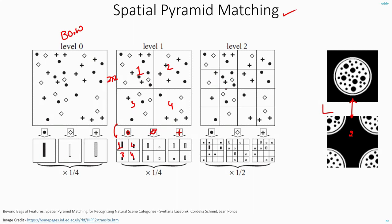In the next level, you again divide the image into a 4x4 grid and calculate the histograms separately for each of these blocks. Once you have this representation, your total combined histogram will be a concatenated version of all three levels. In level 0, you will have just three values — one for circle, one for diamond, and one for the plus symbol. So the values might be 11, 10, and 12.